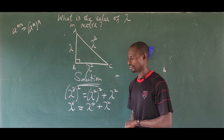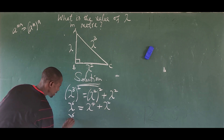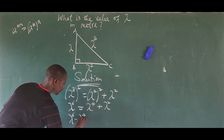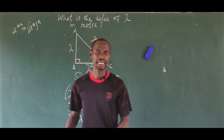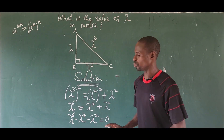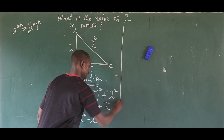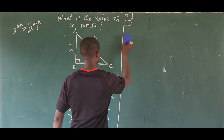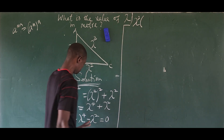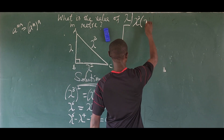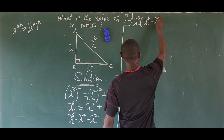This gives us lambda to the power of six minus lambda to the power of four minus lambda squared equals zero. We discover that lambda squared is common to all terms, so we factor it out. Factoring gives us lambda squared times the bracket: lambda to the power of four minus lambda squared minus one, close bracket, equals zero.